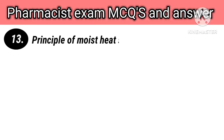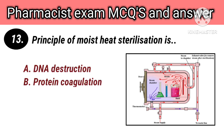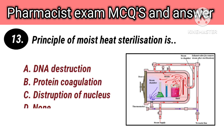Principle of moist heat sterilization is options: A. DNA destruction, B. Protein coagulation, C. Disruption of nucleus, D. None. Right answer is B. Protein coagulation.